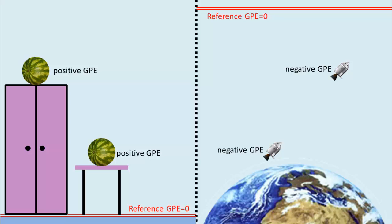What's consistent in both cases is that the potential energy always increases with height, either by becoming more and more positive, or by becoming less and less negative.